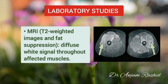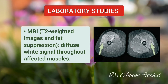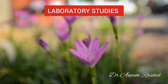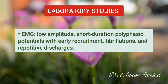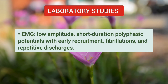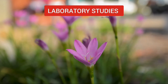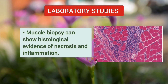MRI T2-weighted images with fat suppression reveal diffuse bright signal throughout the affected muscle. Electromyography shows low amplitude, short duration polyphasic potentials with early recruitment, fibrillation, and repetitive discharges. Muscle biopsy reveals histological evidence of necrosis and inflammation.